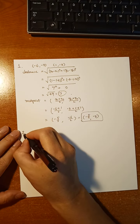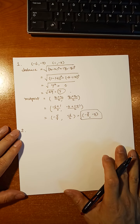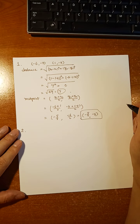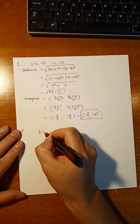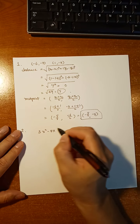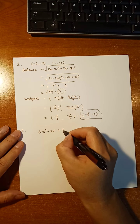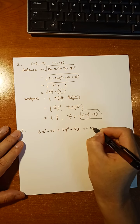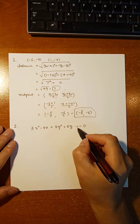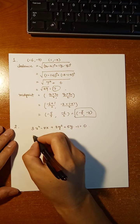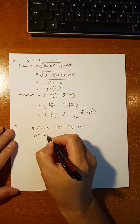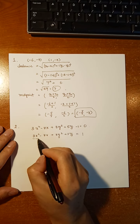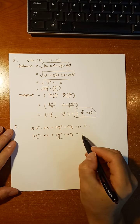Second problem: we're going to use the completing the square trick to find the center and the radius. We have 3x squared minus 4x plus 3y squared plus 5y minus 1 equals 0. First, we're going to move 1 to the right side. We have 3x squared and 3y squared, so we divide the equation by 3.